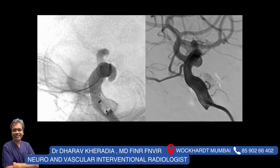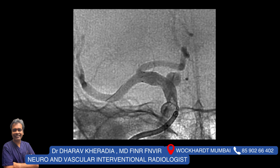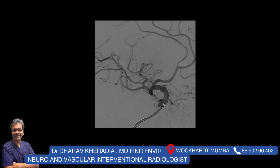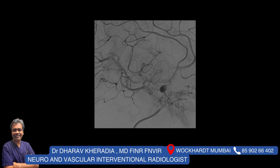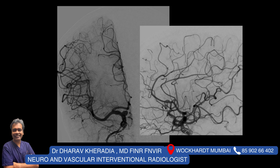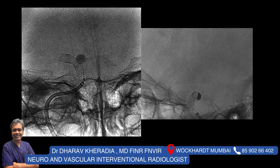This is the flow diverter stent placement — you can see it placed in the parent artery across the aneurysm neck. This is the angiography after flow diverter placement — you can see stasis of contrast inside the aneurysm, which means the flow diverter has already started working. There were no thromboembolic complications at the end of the procedure. You can see nice stasis of contrast inside the aneurysm, confirming the flow diverter is working effectively.